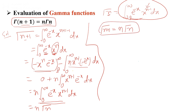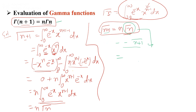We have proved that Gamma(n+1) = n·Gamma(n). So if we have Gamma(n+2), we write (n+1)·Gamma(n+1). Applying the same relation on Gamma(n), we can write Gamma(n) = (n-1)·Gamma(n-1).